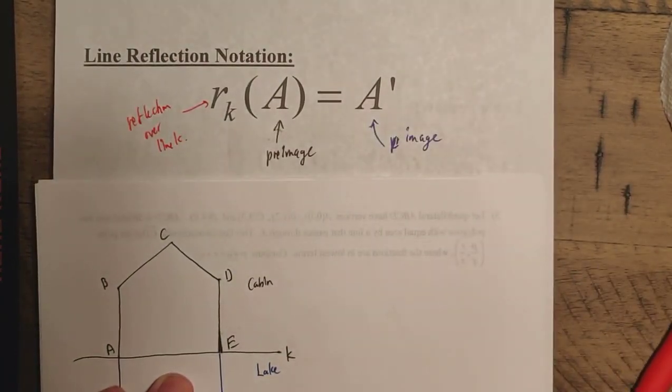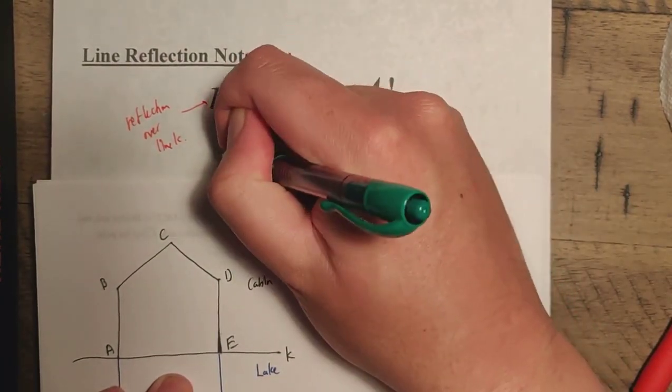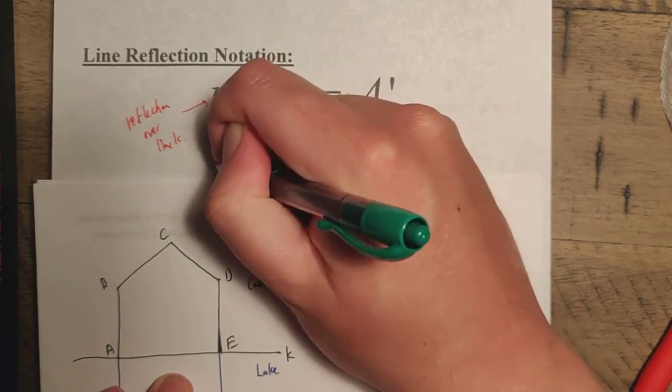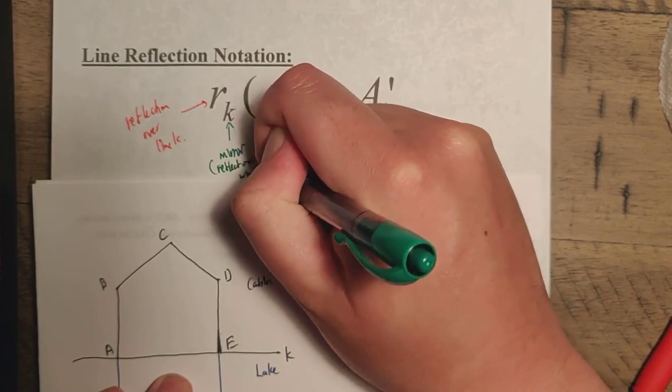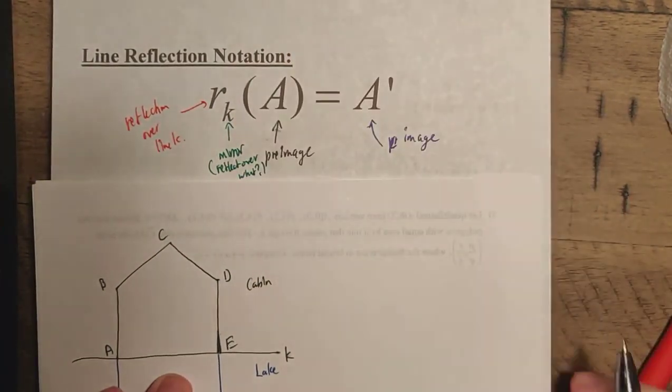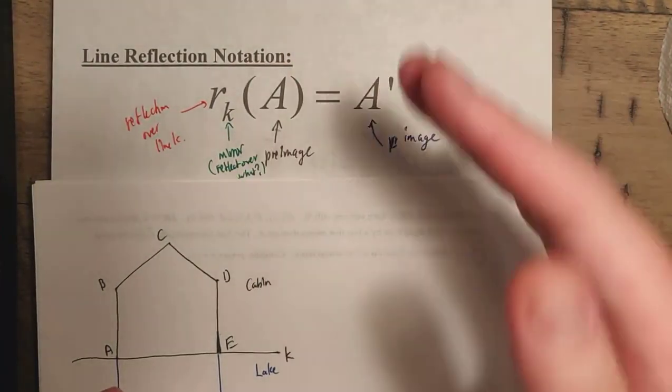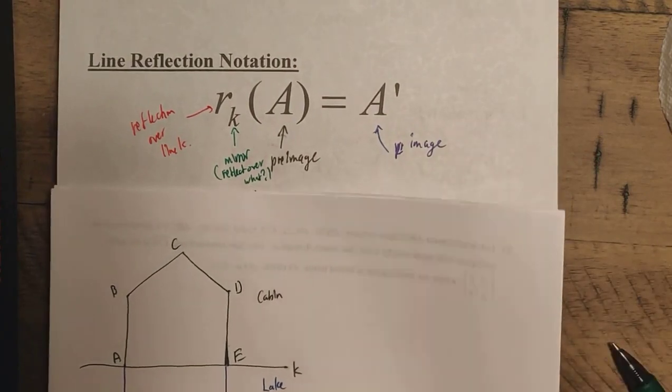So I think you can see here, this portion down here, this is going to be our mirror here. This is going to represent reflect over what? Right? So basically what we have here is just notation that we're going to be using to determine what's going on here.